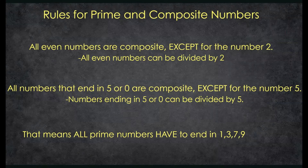Now, we need to talk about something important. That does not mean all numbers ending in 1, 3, 7, or 9 are prime. We just saw an example earlier — the number 21 ends in 1, but it wasn't prime; it was composite because there were two ways to make it. So don't get those two concepts confused. Not all numbers ending in 1, 3, 7, or 9 are prime, but all prime numbers will end in 1, 3, 7, or 9. It's a very slight but important difference.